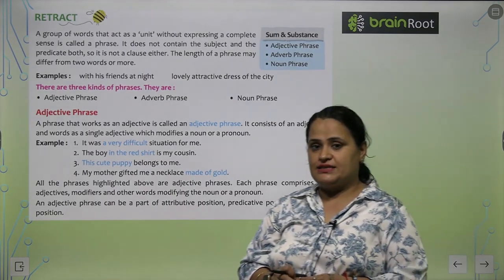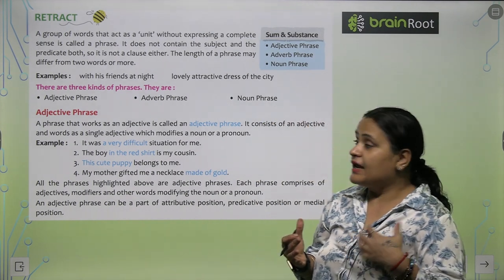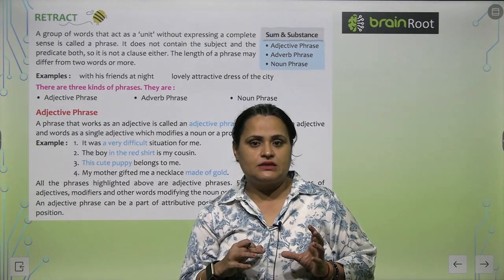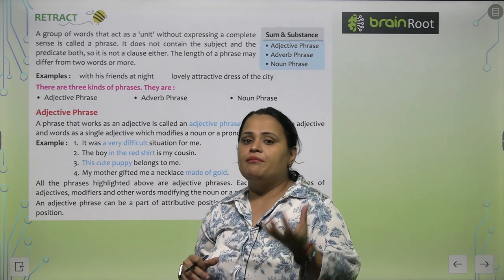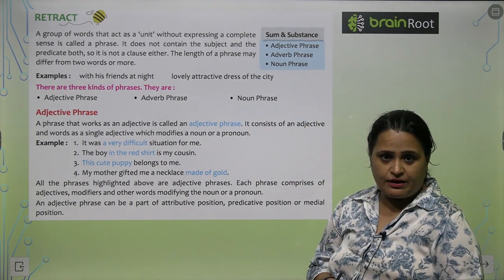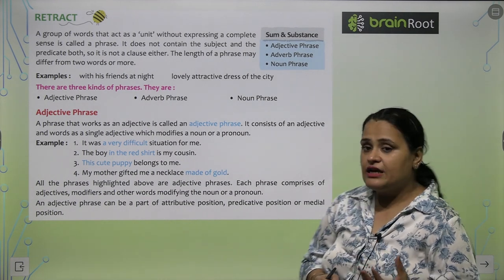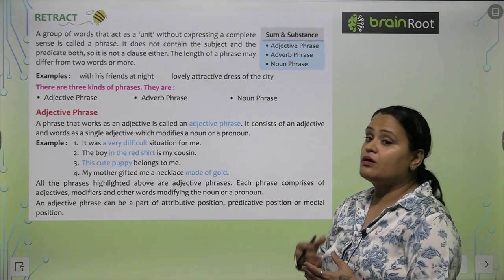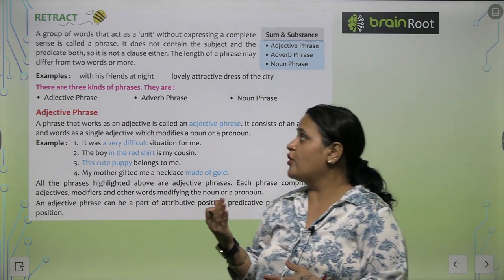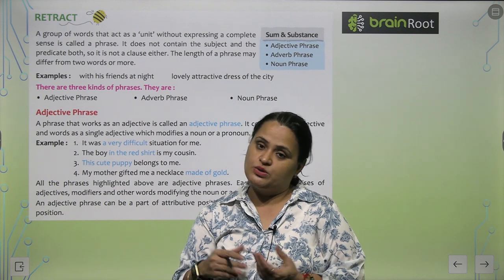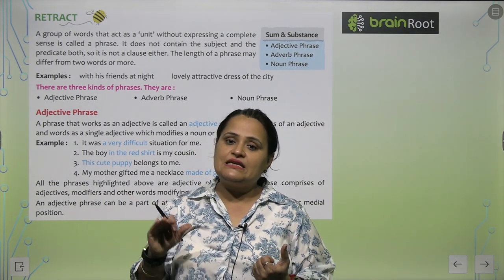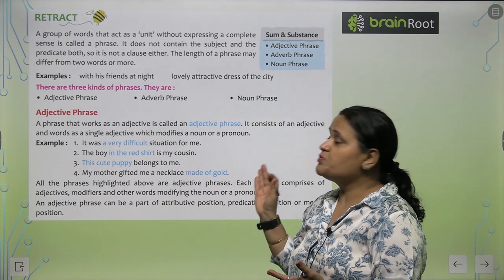So what are phrases? A group of words — a group of words that act as a unit — is called a phrase. It does not contain a subject, it is not subject and predicate both, and it is not a clause either. The length of a phrase may differ from two words or more. It has neither a subject nor a predicate, which is why we cannot call it a clause.